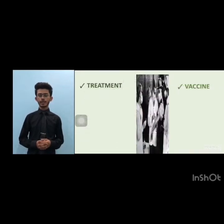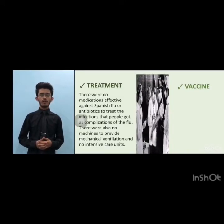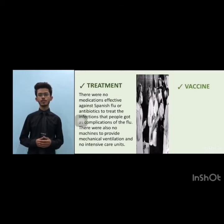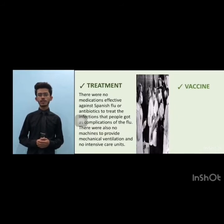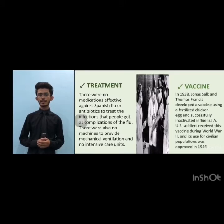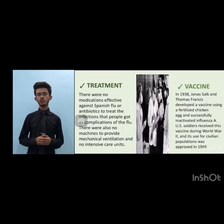As for treatment, during the initial stage there was no vaccine to protect against influenza infections and no antibiotics to deal with secondary bacterial infections. There were also no machines to provide mechanical ventilation and no intensive care units. Efforts were limited to non-pharmaceutical interventions. In 1938, Jonas Salk and Thomas Francis developed a vaccine using a fertilized chicken egg, successfully inactivating the influenza infection. This vaccine was first given to US military soldiers during World War II, and its use for the civilian population was approved in 1946.